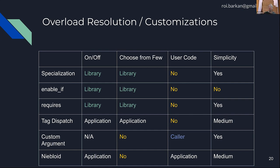Amir linked to a Stack Overflow answer saying the standard deliberately avoids specifying any particular technology to achieve type constraints. This hints you might be able to change standard library functions to use concepts, since it's an implementation detail not specified by the library API.